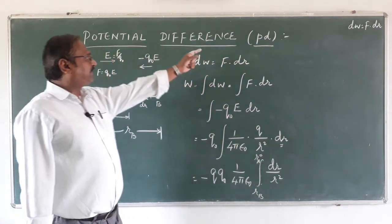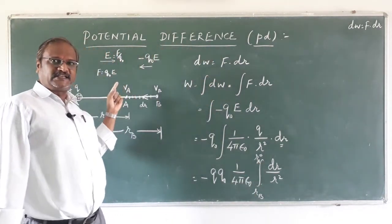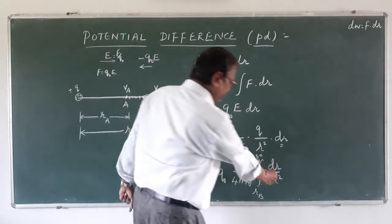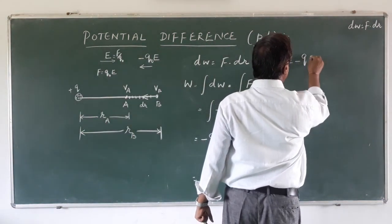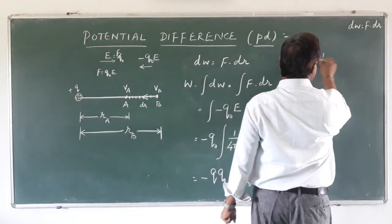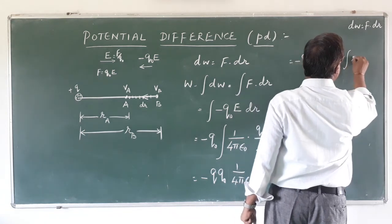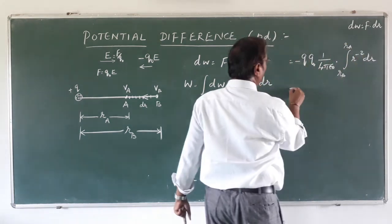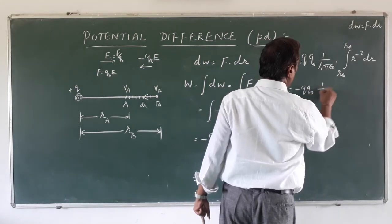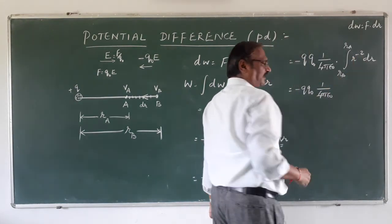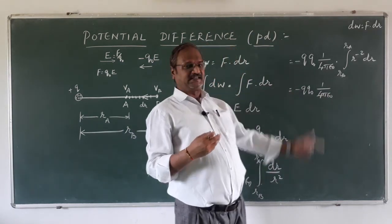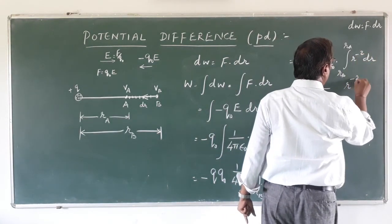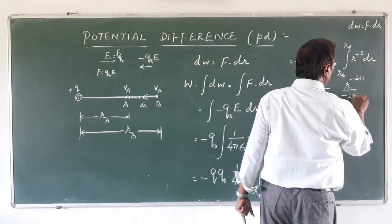Earlier we brought the charge from infinity to a point in the electric field; here we are moving within a limited distance. We integrate r to the power minus 2 with respect to r. Applying the power rule — x to the power n integrates to x to the power n+1 divided by n+1 — with n equal to minus 2, we get r to the power minus 2 plus 1 divided by minus 2 plus 1.